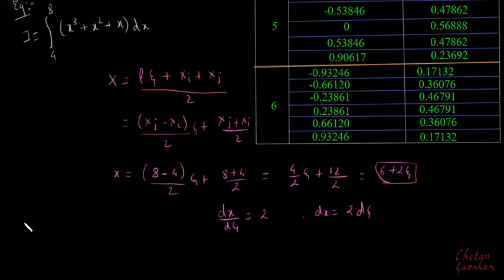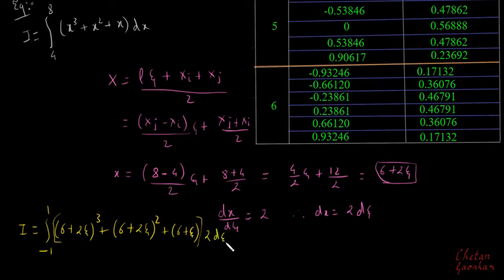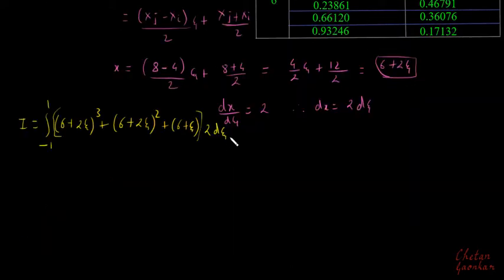So our new integral I becomes the integral from minus one to plus one of [(6 + 2ξ)³ + (6 + 2ξ)² + (6 + ξ)] multiplied by 2 dξ. Now is the time to decide how many Gauss points we require — whether it is one, two, three, or more Gauss points.